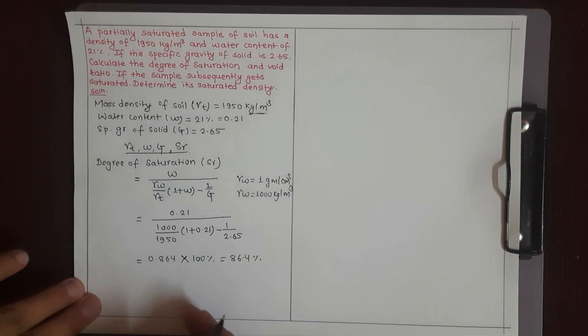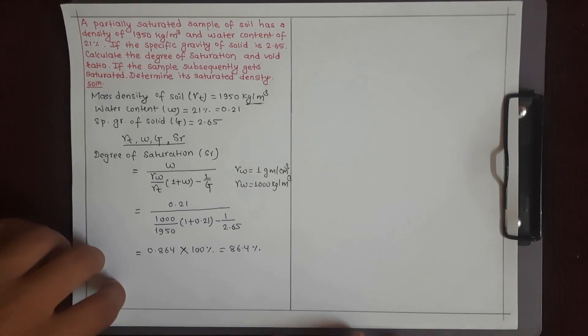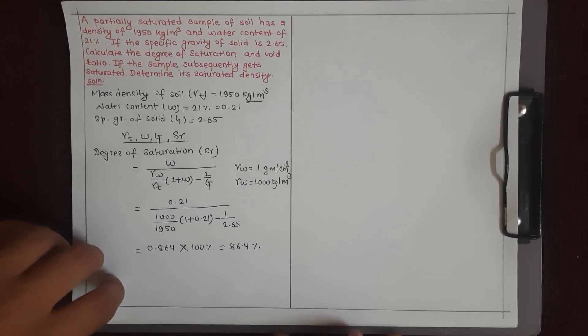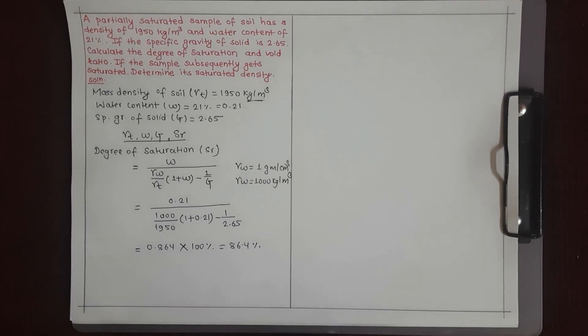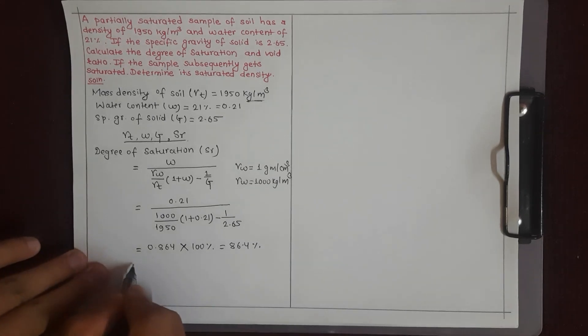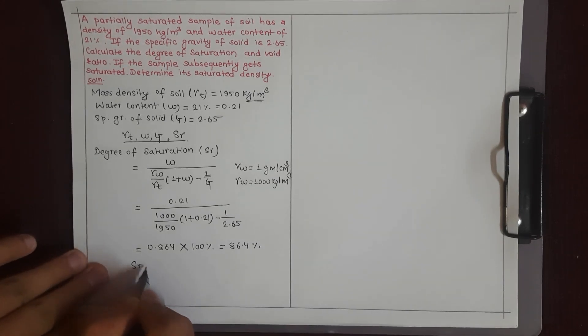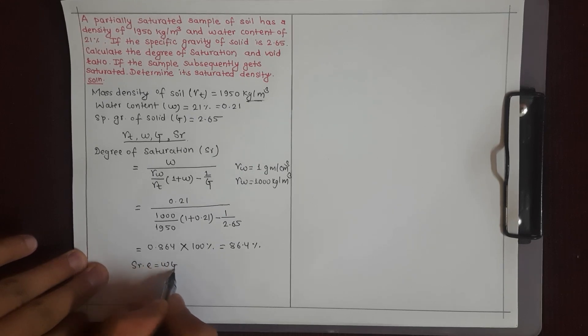For the void ratio, we use the relationship: degree of saturation SR equals wG, where w is water content and G is specific gravity.